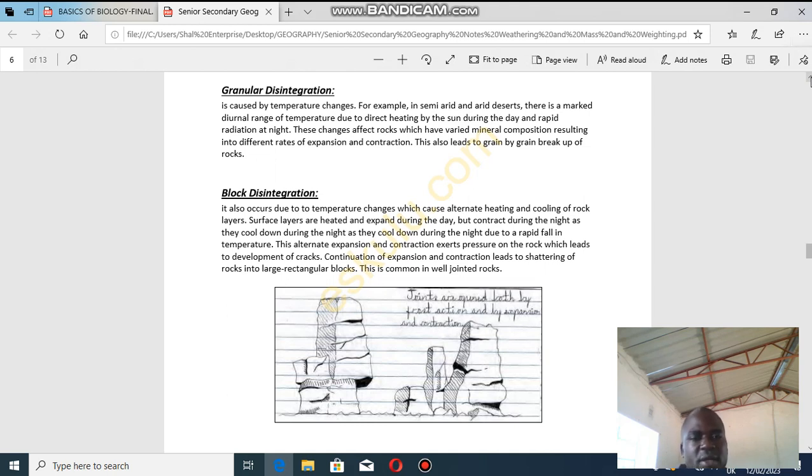The next one is block disintegration. It occurs due to temperature changes which cause alternate heating and cooling of rock layers. Surface layers are heated and expanded during the day but contract during the night as they cool down due to rapid fall in temperature.